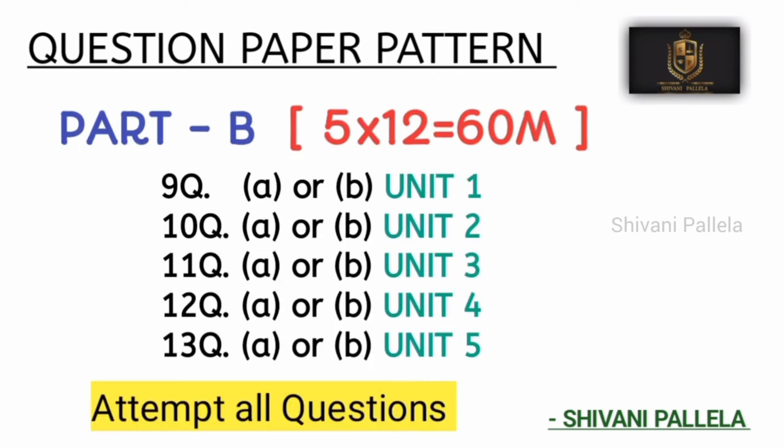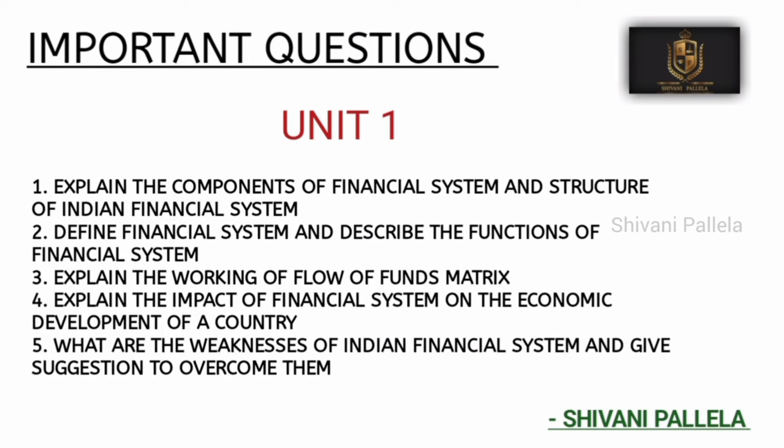Coming to Part B, it consists of 60 marks where you will attempt all the questions — there is no external choice, only internal choice. For example, question 9A or 9B will both come from Unit 1; you attempt either A or B depending on which you are more prepared with. Part B consists of 12 marks for each question, and minimum three sides of answer is a must to score O grade, as well as to get pass marks.